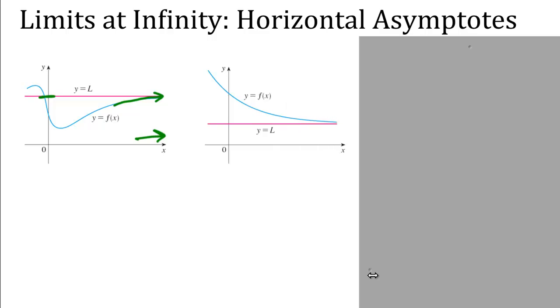In this next example, the function is approaching from above. So again, as X goes off the screen to the right side, the Y value of the graph is getting close to a fixed value L, this horizontal red line.